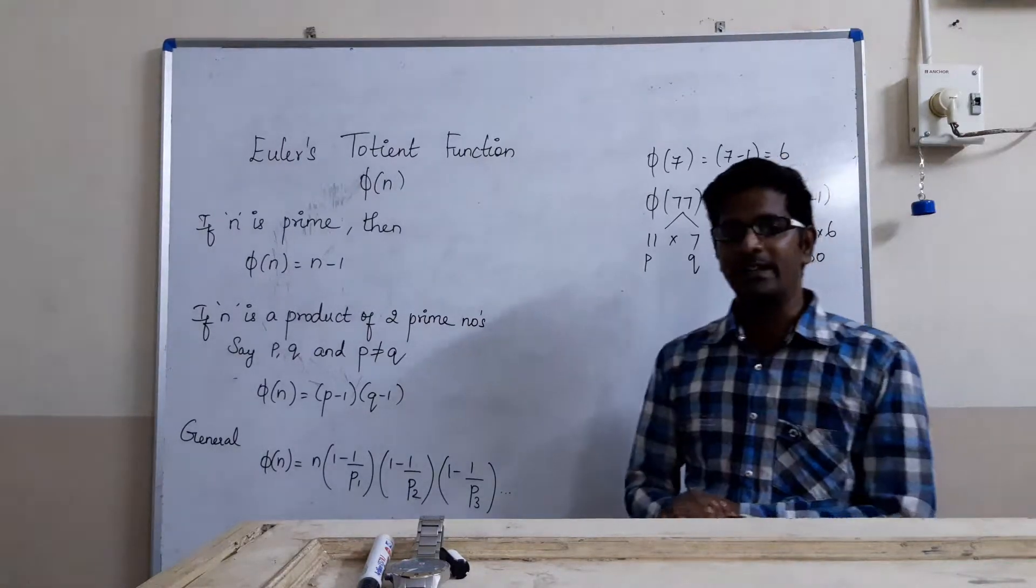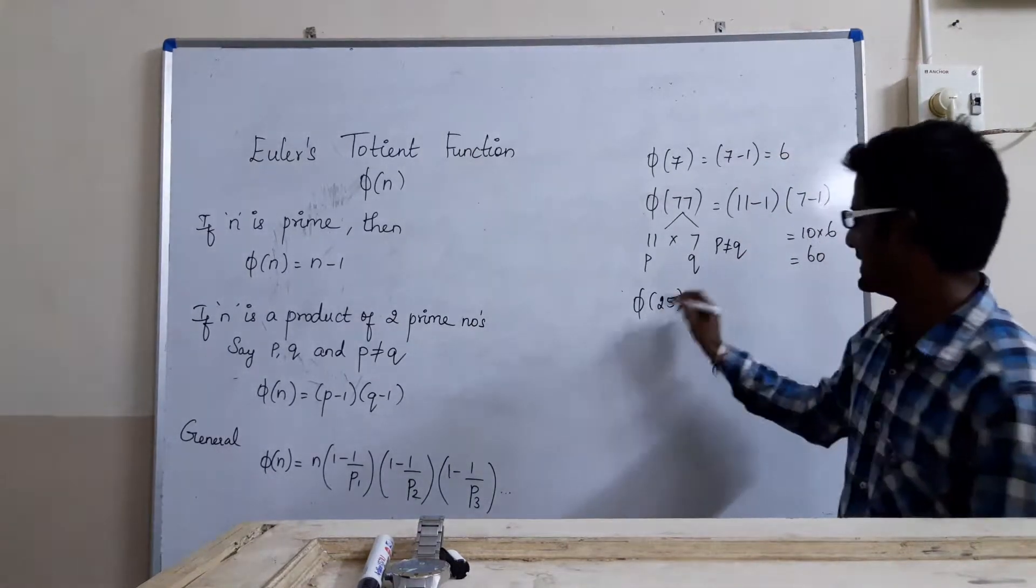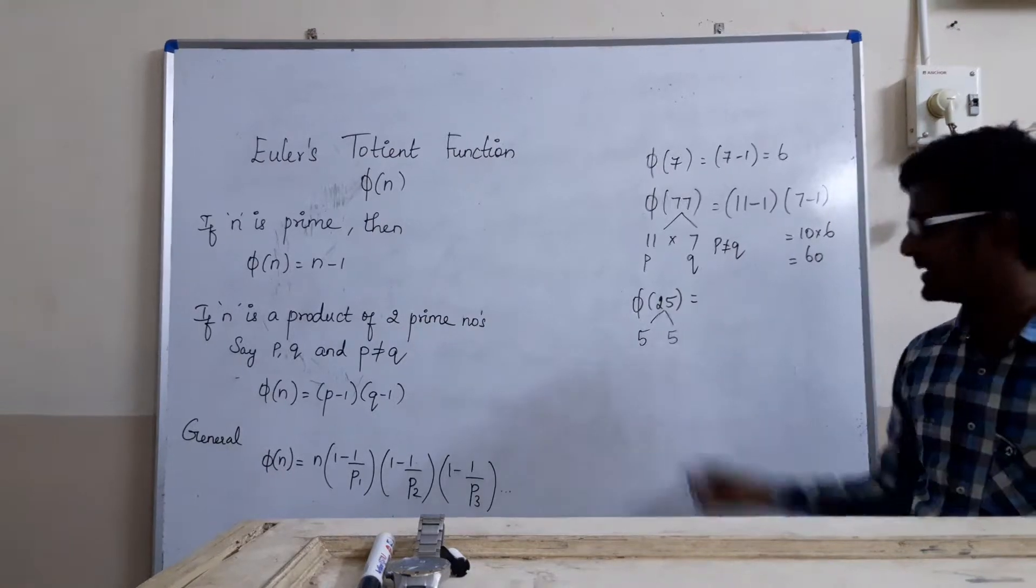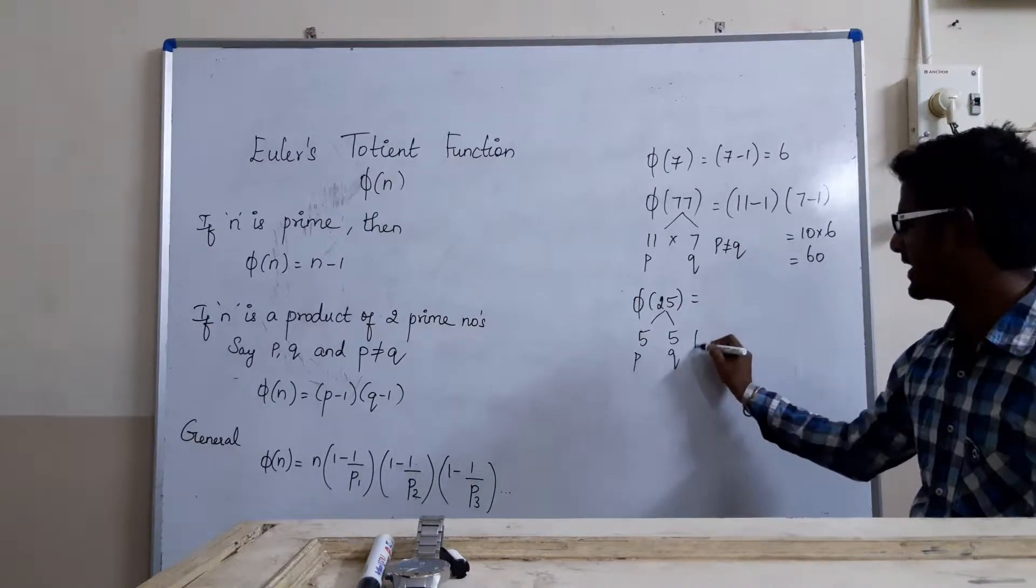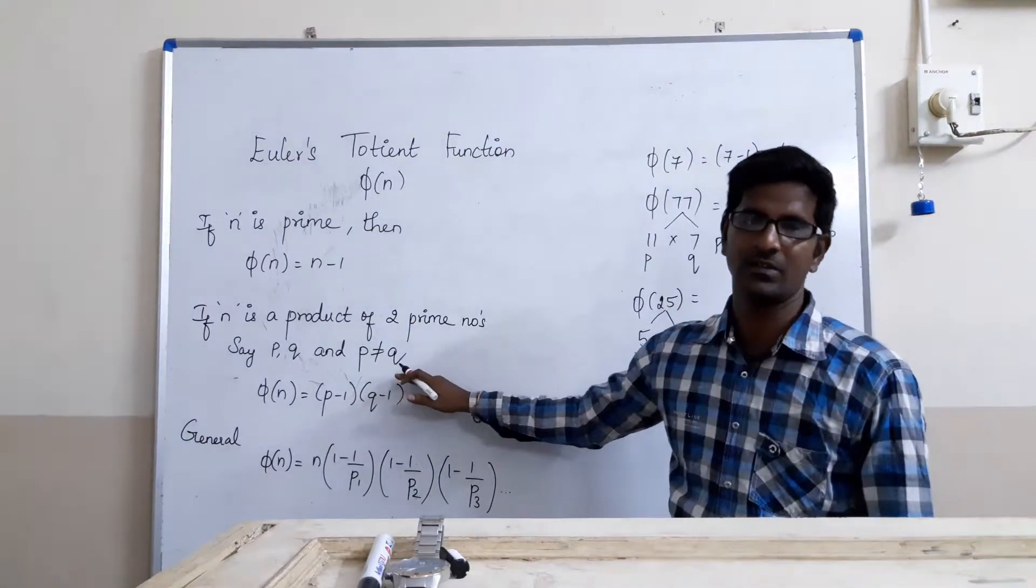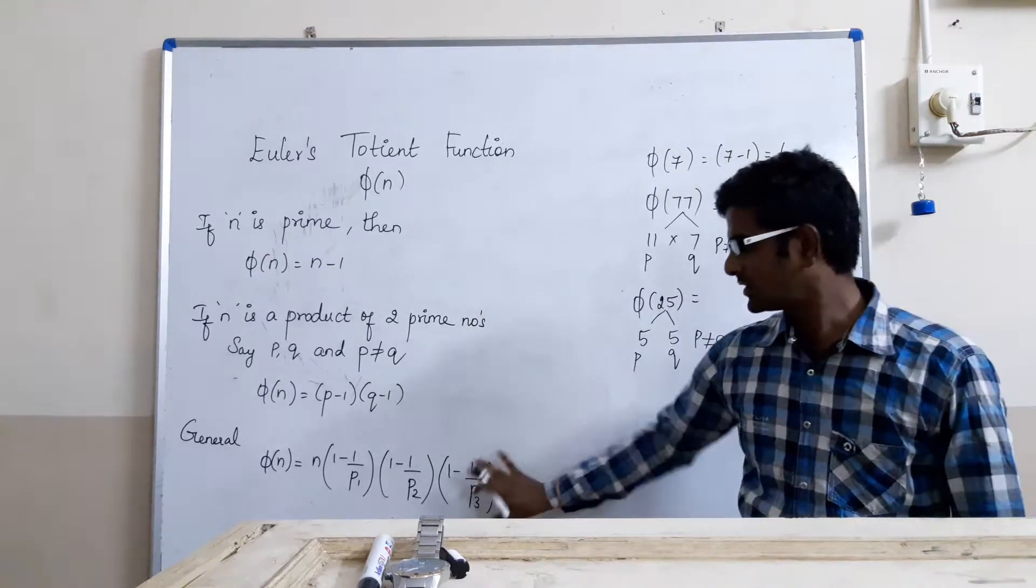In general, for example, phi of 25. In this case, we see it is a product of two prime numbers only, 5 and 5. But if you say p equals 5 and q equals 5, p must not be equal to q in order to use this formula. If this is given, how to solve it?